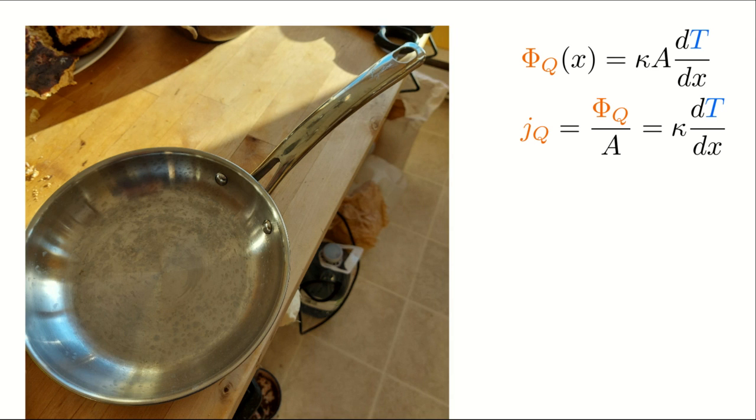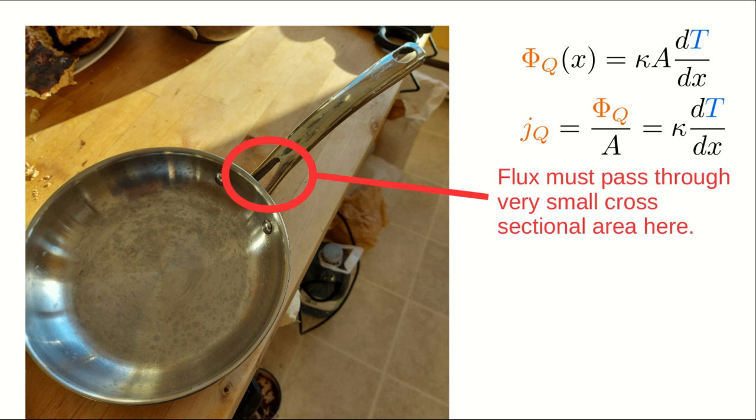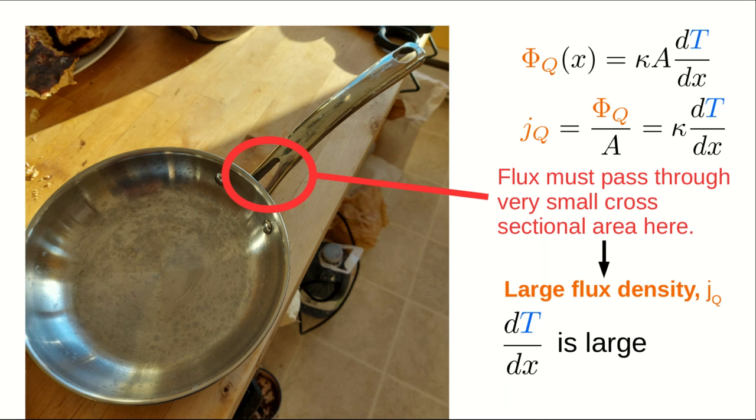Fourier's law has lots of implications and applications. For example, look at this frying pan, and notice how where the handle joins the pan, the flux must all pass through a very small cross-sectional area of metal. And because it's passing through a small cross-sectional area, that tells us there will be a large flux density in that part of the handle, which means the rate of change of temperature with respect to position is large. In other words, the temperature changes a lot between the pan and the handle, which makes the handle cooler, which is a good thing.